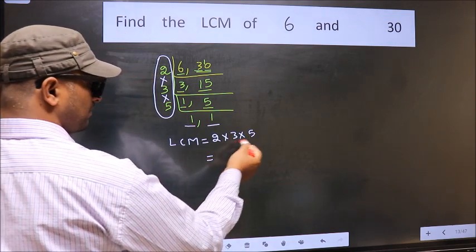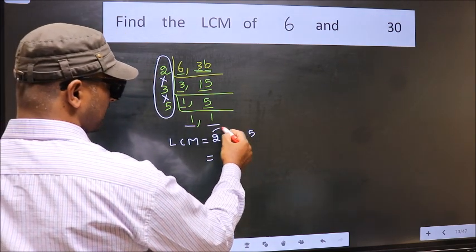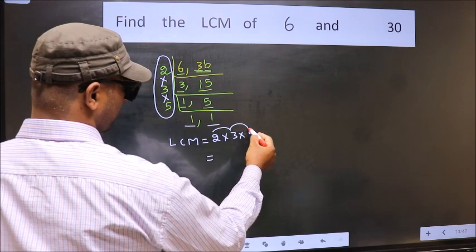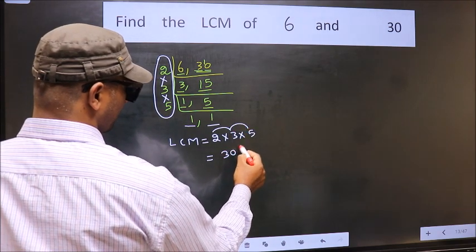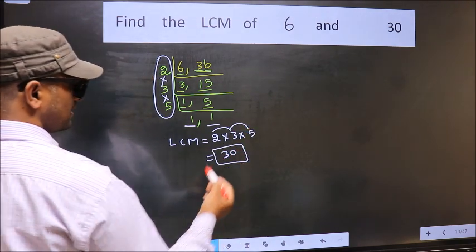So let us multiply these numbers. 2 into 3 is 6, 6 into 5 is 30. So 30 is our LCM.